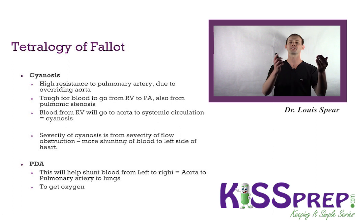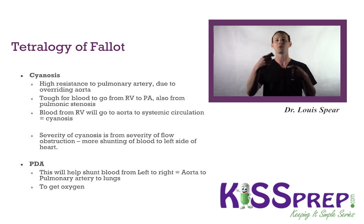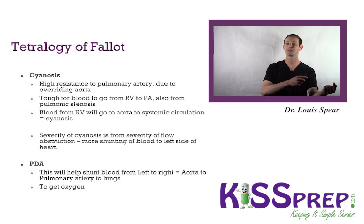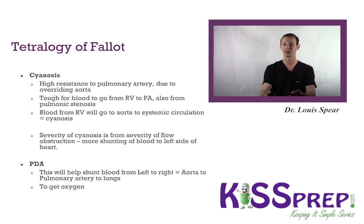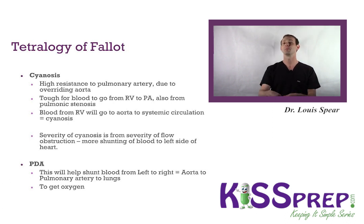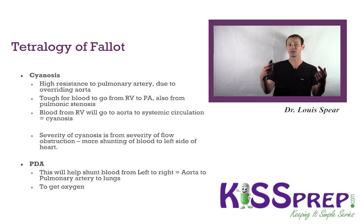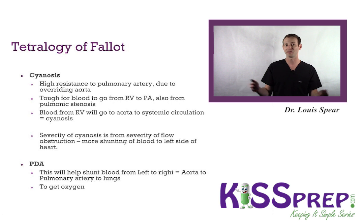There's a tough time for blood to go from the right ventricle to the pulmonary artery because of pulmonary stenosis, so blood will go from the right ventricle to the aorta and into the systemic circulation — causing cyanosis. That overriding aorta coupled with pulmonic stenosis means deoxygenated blood from the right ventricle goes to the body, leading to cyanosis. Severe enough cyanosis can be incompatible with life.